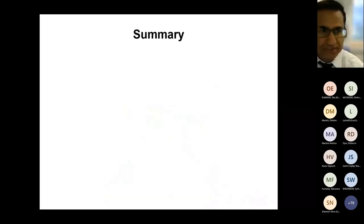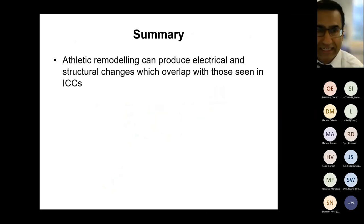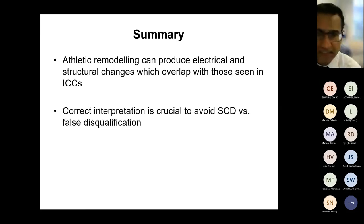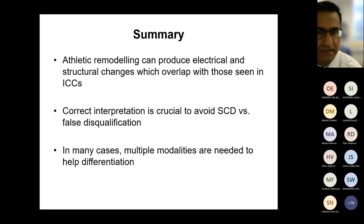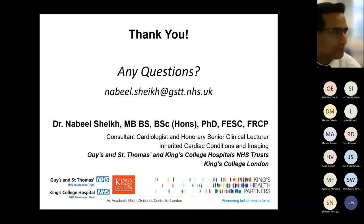To summarize: athletic remodelling can produce electrical and structural changes which overlap with those seen in inherited cardiac conditions. Correct interpretation is crucial to avoid sudden cardiac death on the one hand and false disqualification on the other. In many cases, particularly with the cardiomyopathies, multiple modalities are needed to help this differentiation, and we need to refer to people who have done this a lot. I'll stop there, sorry for running a bit over — I'm happy to take any questions via email and during the panel discussion.